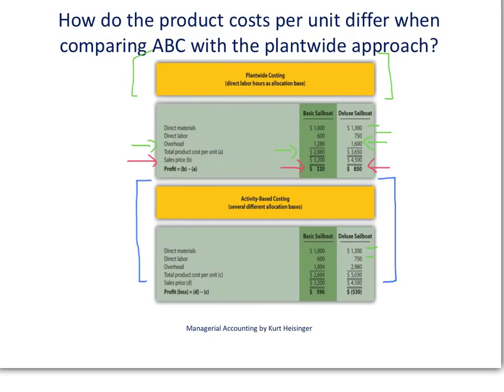The problem was, as the company continued to push the sales of deluxe sailboats — perhaps offering higher commissions to salespeople — as we increased our sales of the deluxe sailboat, our overall company profits went down. Something strange happened: if we increase the sales of our deluxe sailboat which has the highest profit per unit, but our overall profit goes down, something is going on. Management came to us — the managerial accountants — and asked us to reevaluate our product costs. We know the sales prices are accurate, but we are not entirely sure about product costs, particularly overhead, because overhead is not easily traced to individual products.